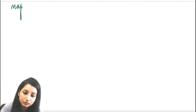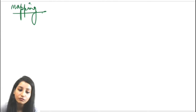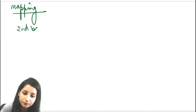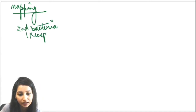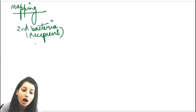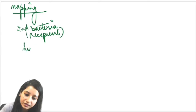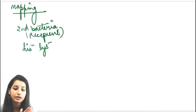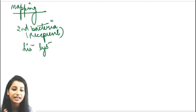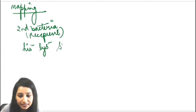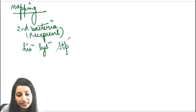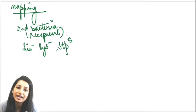Now, this transduction can help us in gene mapping. For example, consider the second bacterium acting as a recipient — it does not contain a wild type of histidine and does not have a wild type of lysine. It is also streptomycin-sensitive. Streptomycin is an antibiotic, so if grown on a plate where streptomycin is present, it won't be growing.